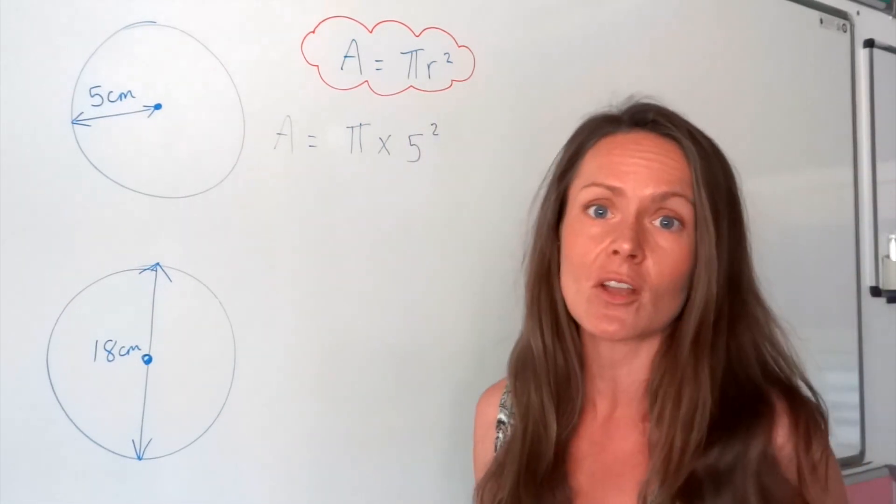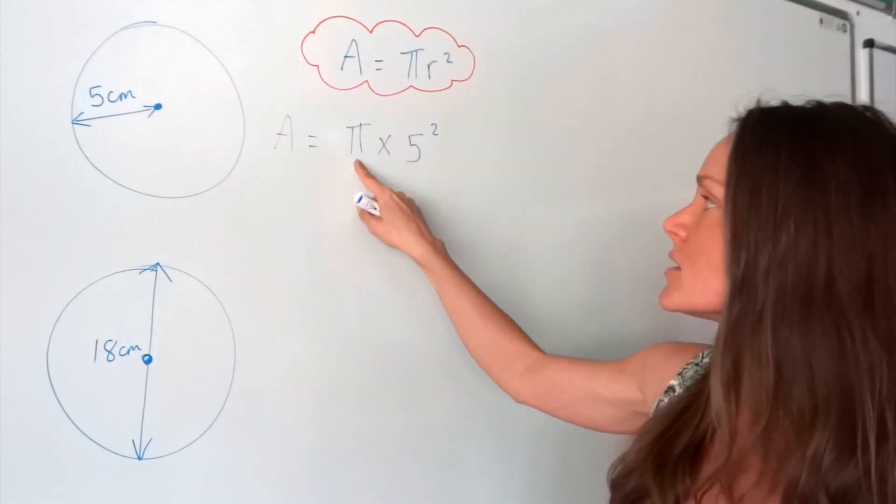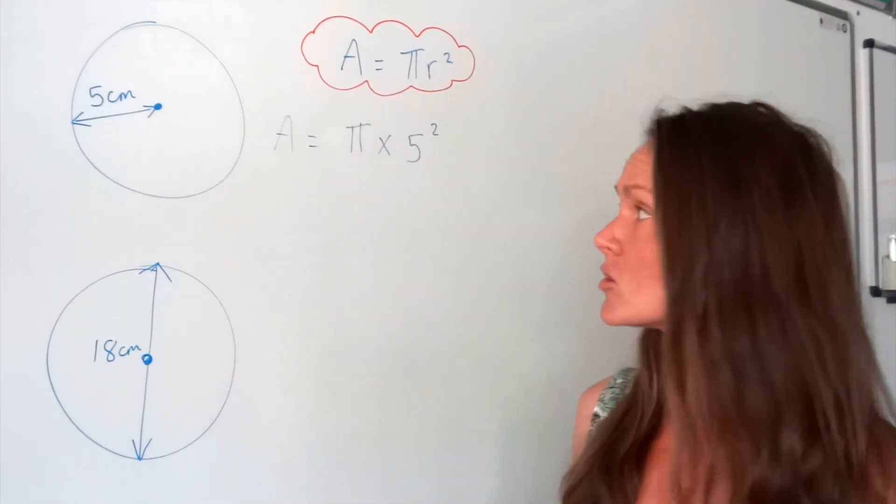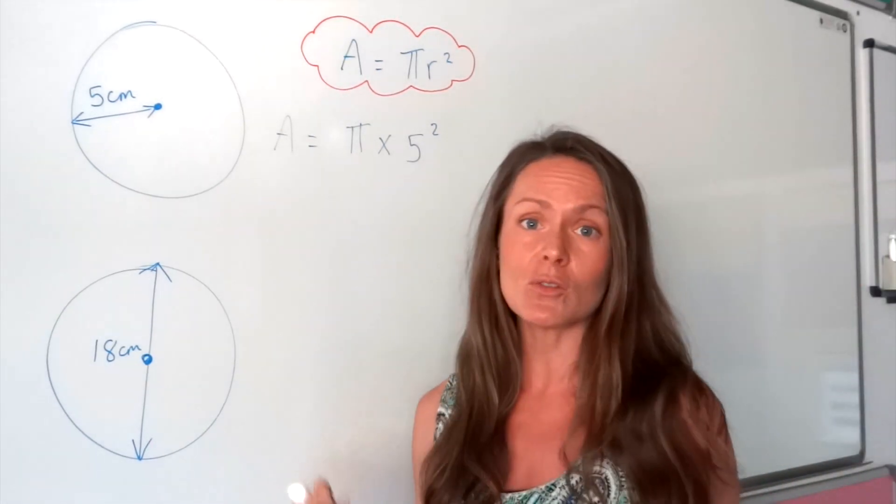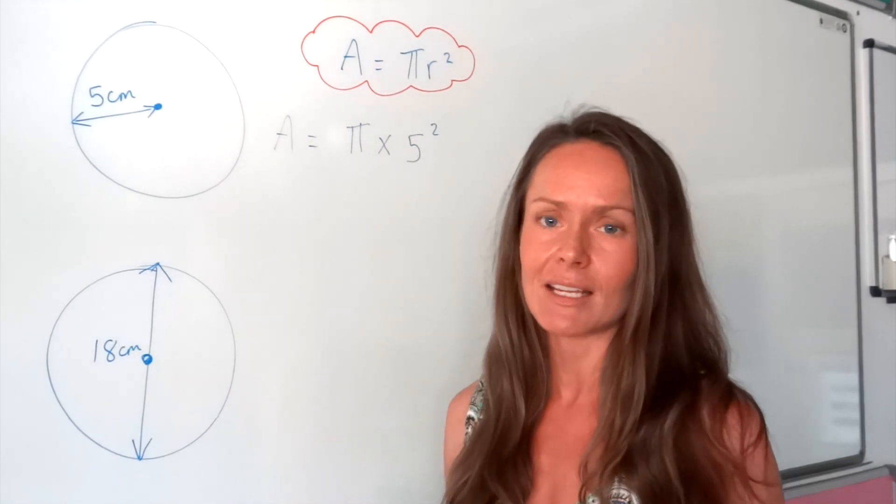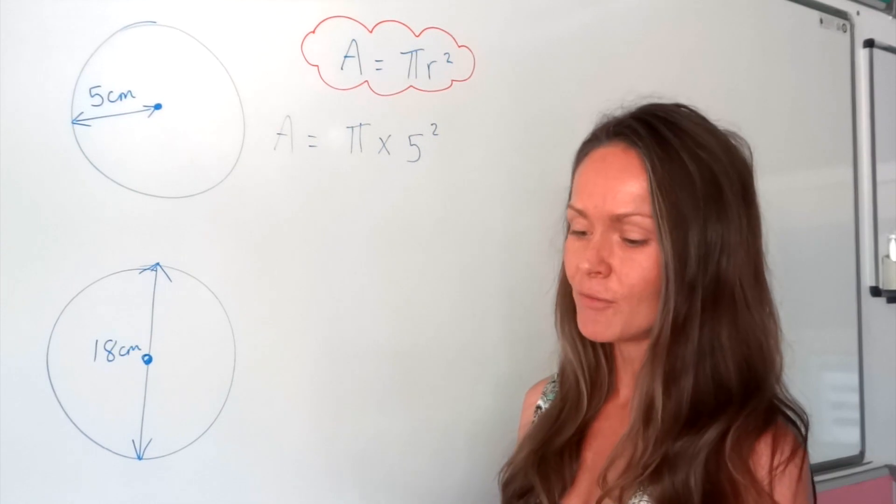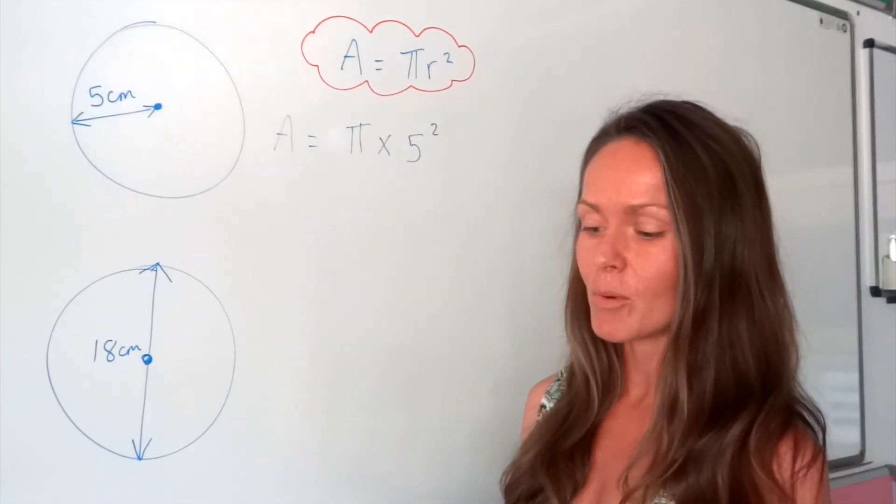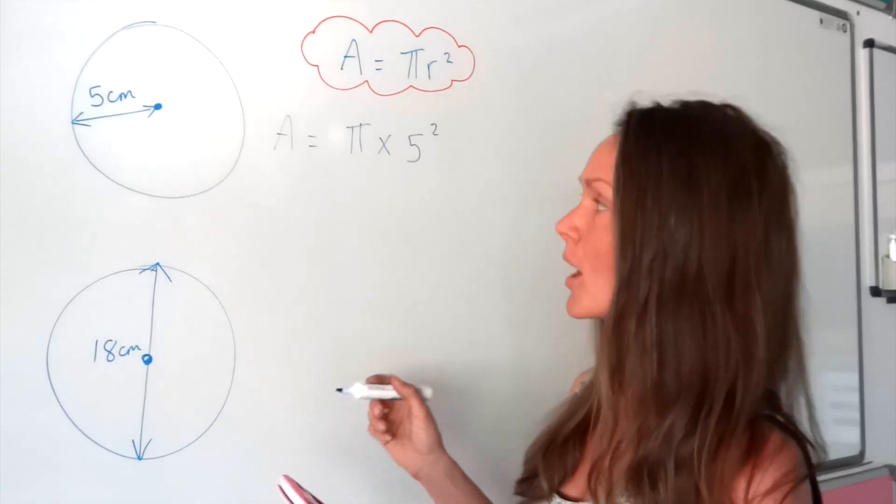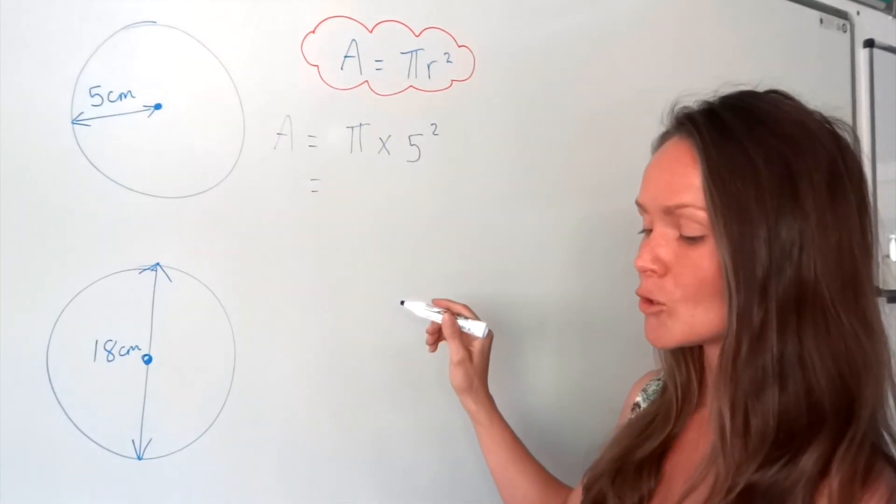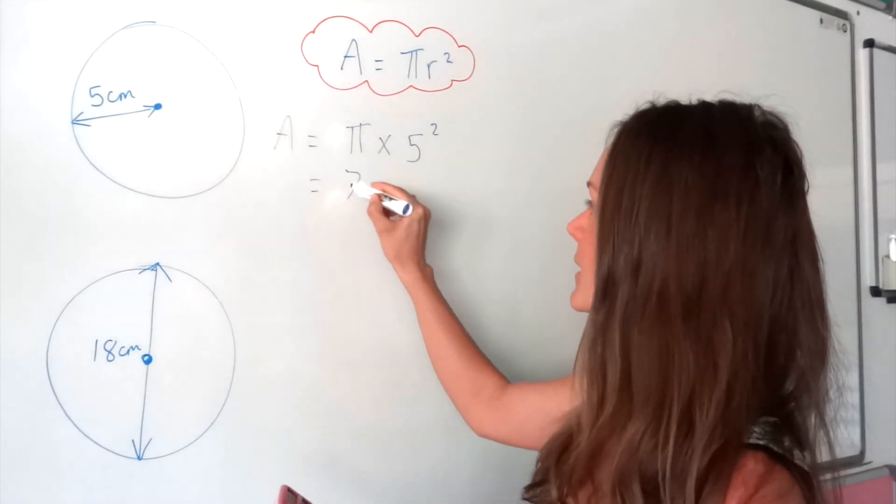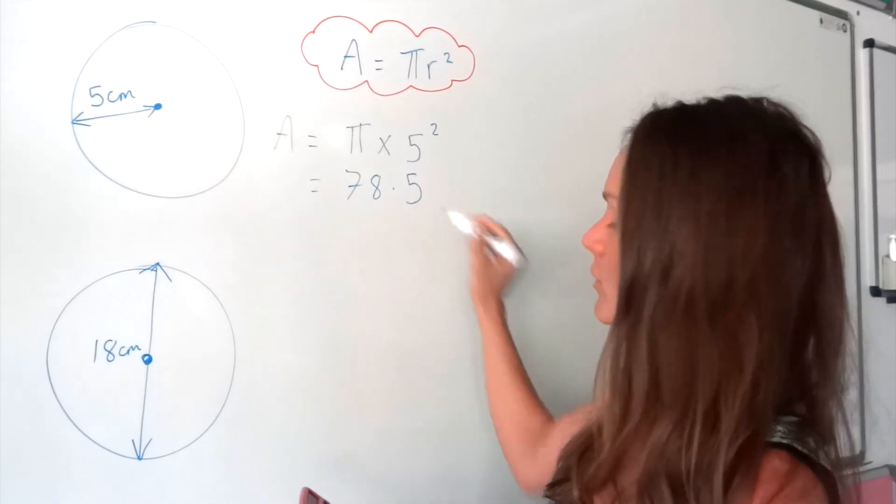But for this question, I'm just going to use the calculator. Because pi is a long number, there are lots of decimals after pi, so to do this really accurately, I need the calculator. So on the calculator, usually you have to press shift before you get the pi, and then multiply by 5 squared. So I'm going to round this answer to one decimal place, so that gives me 78.5.